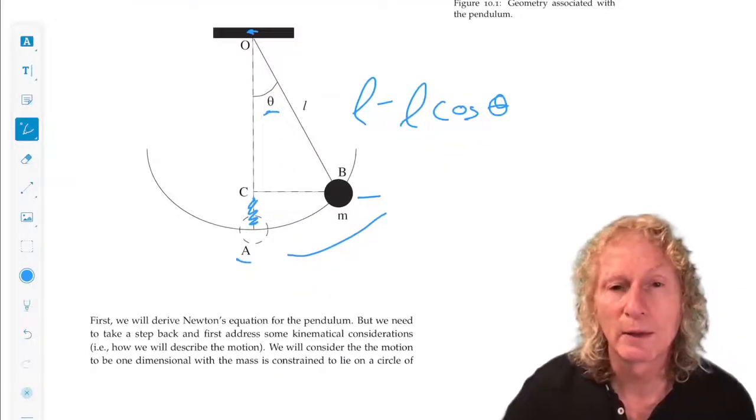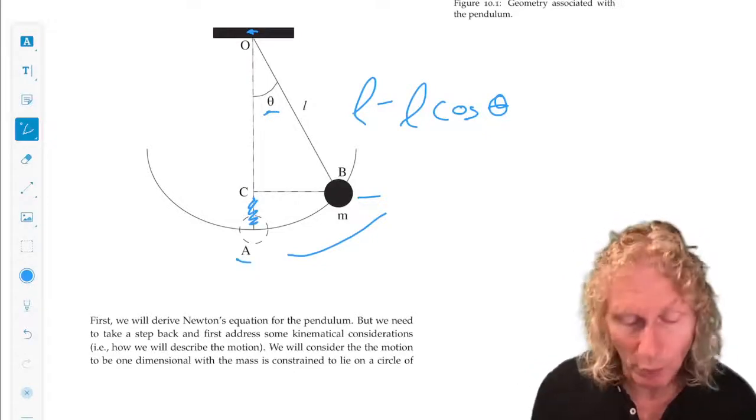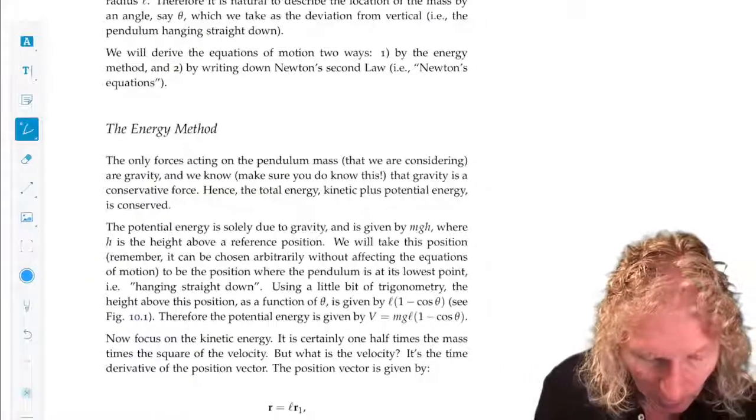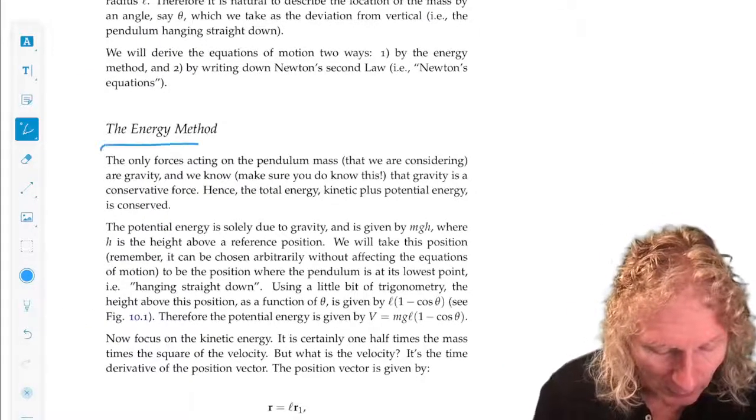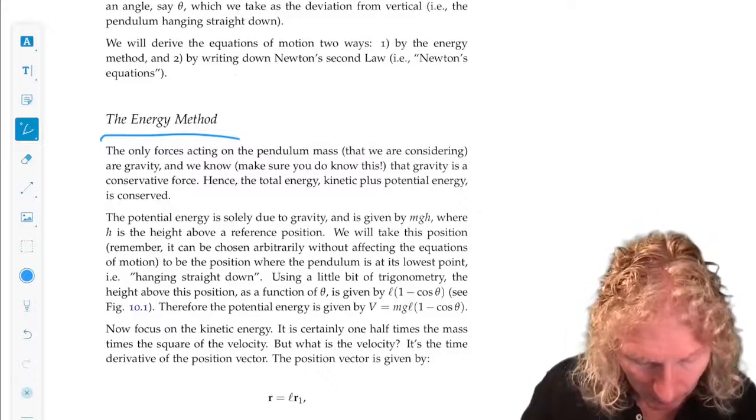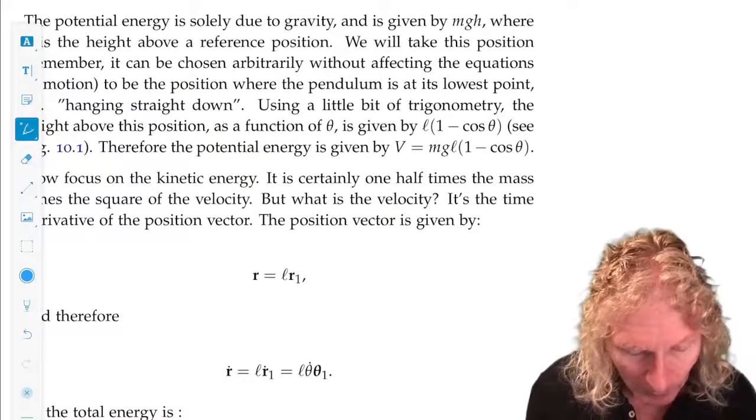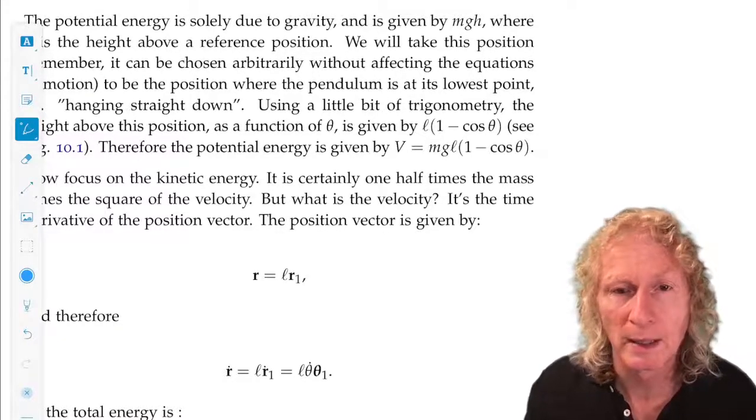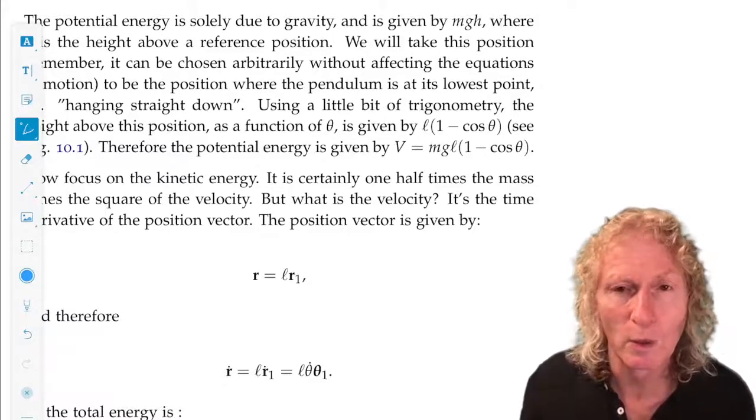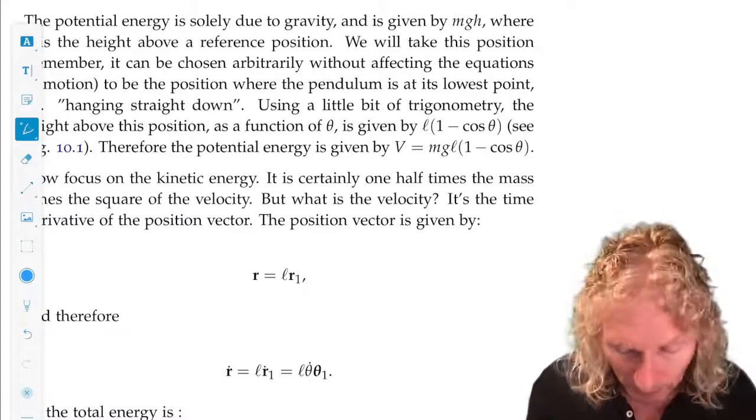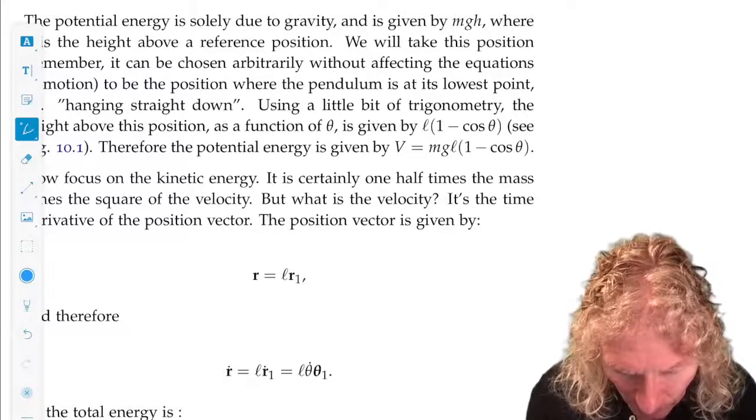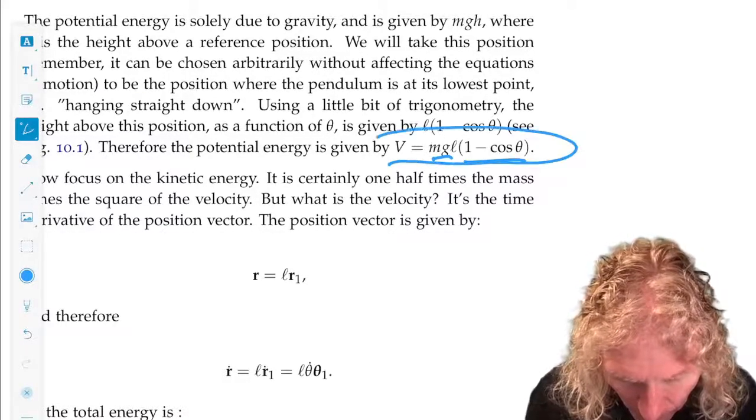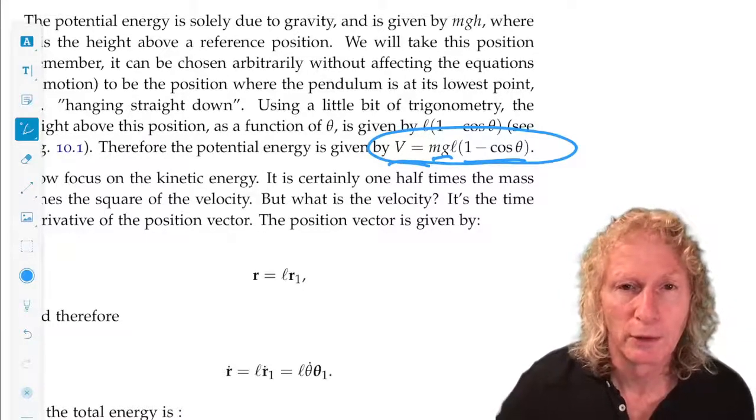So with that description of the simple pendulum, we're going to derive equations of motion. We're going to do this in two ways. The first way is the energy method. So there's kinetic plus potential, and added together, these are constant. So the kinetic is one half m v squared. And potential is mg times the height above the reference position, and I just described that.